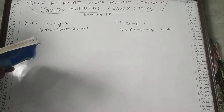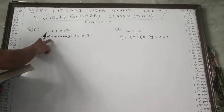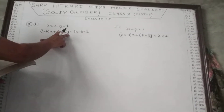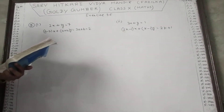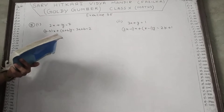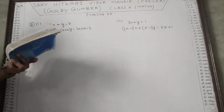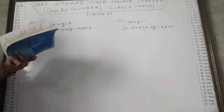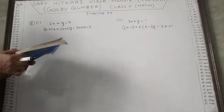First part is: 2x plus 3y equal to 7, (a minus b)x plus (a plus b)y equal to 3a plus b minus 2. So, let's check for which values of a and b the following pair of linear equations has infinite solutions.